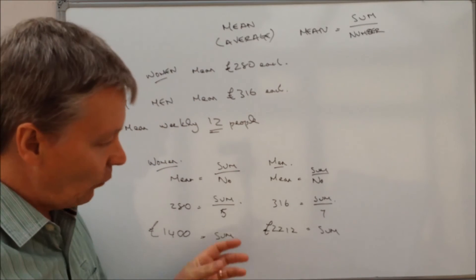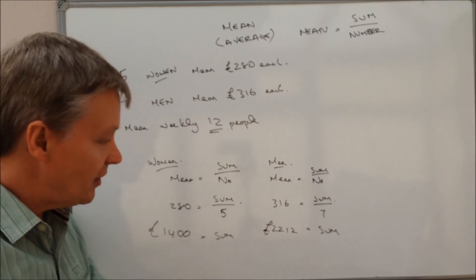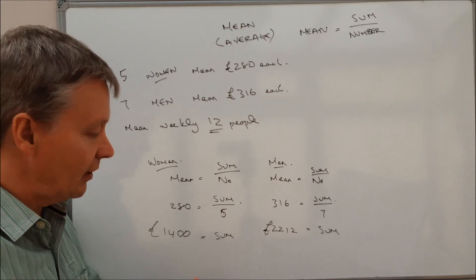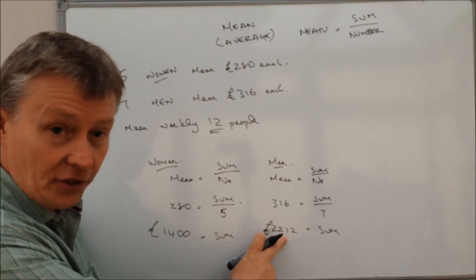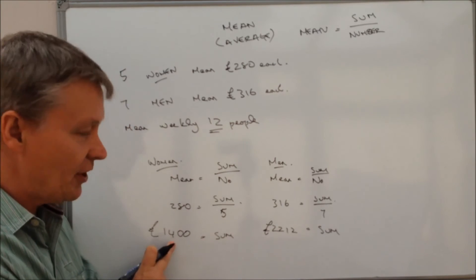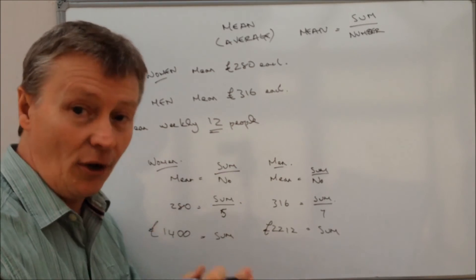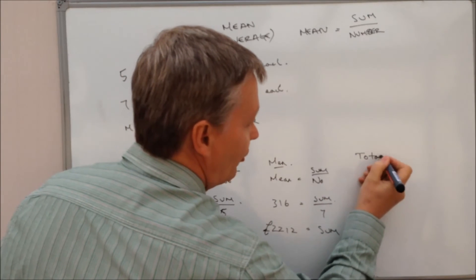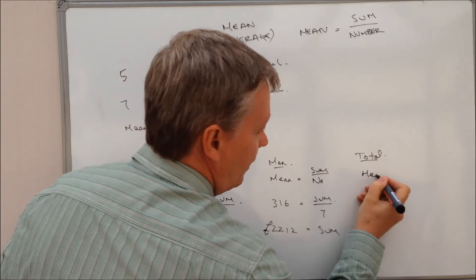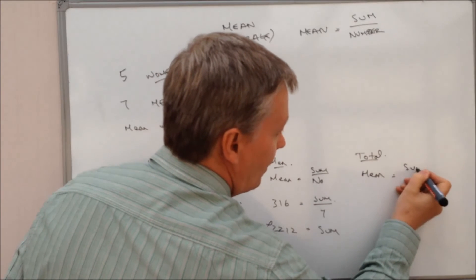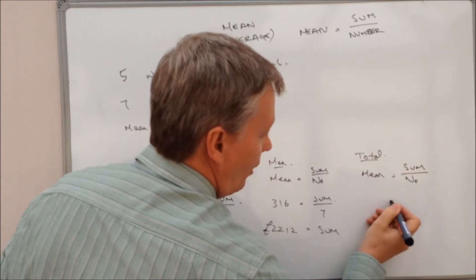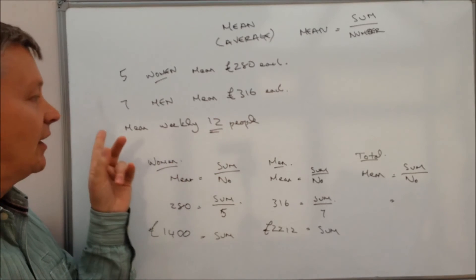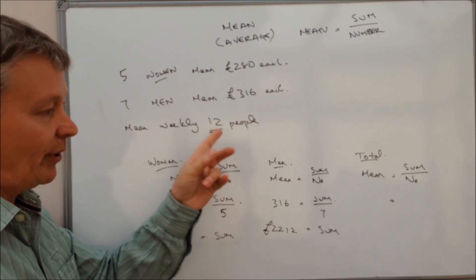So what we've got now is that the total wage check for working in that particular job by the employer is going to be 2212 plus 1400. So for the total people, we can use the same formula. We've got mean equals sum divided by number. This is what we're asked to calculate. We want to calculate the mean weekly amount for the 12 people.